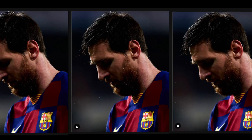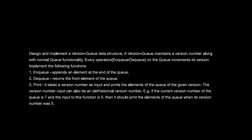Let's talk about another quant interview problem. The question is that you have to design and implement a version queue data structure. A version queue maintains a version number along with normal queue functionality. The normal queue functionalities are enqueue and dequeue, and every enqueue and dequeue operation on the queue is going to increment its version. Enqueue will append an element at the end of the queue and dequeue will return the element from the front of the queue.